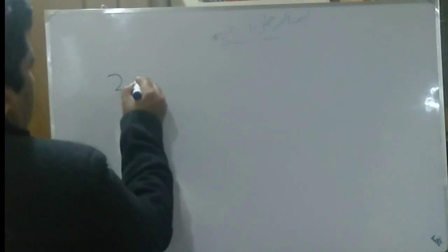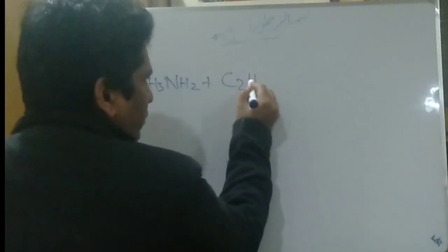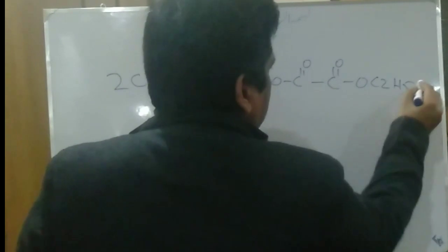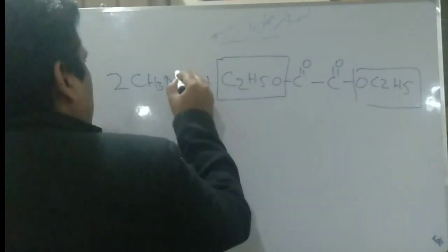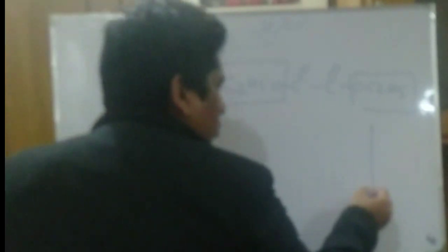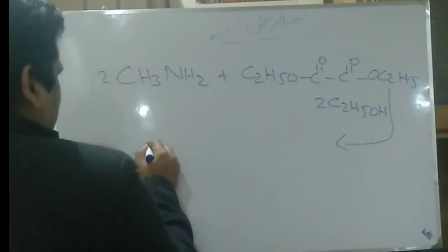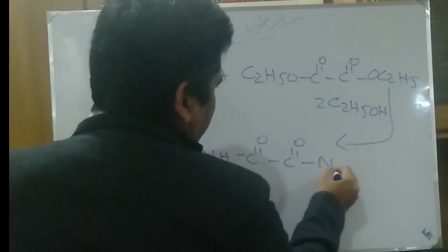Azathioprine is synthesized by the following steps, which we will discuss one by one. In the first step, two molecules of methylamine react with diethyl acetate: 2 CH₃NH₂ reacts with diethyl acetate C₂H₅OC(O)OC₂H₅. The ethoxy group from each side and two protons from methylamine are removed, and two molecules of C₂H₅OH are eliminated to form a new intermediate structure CH₃NH-C(O)-NHCH₃.